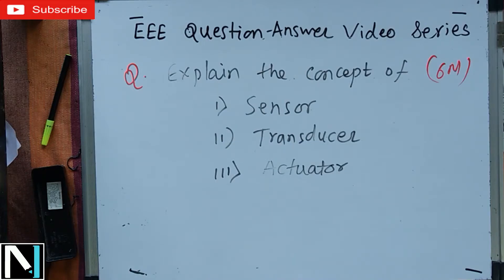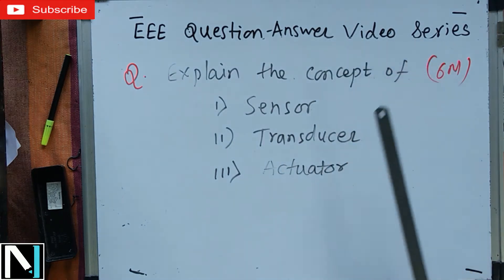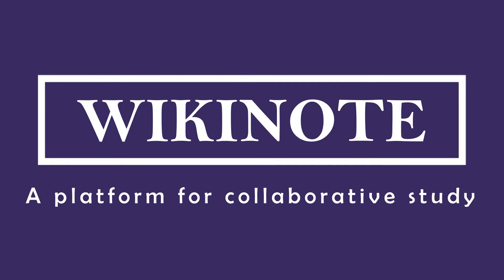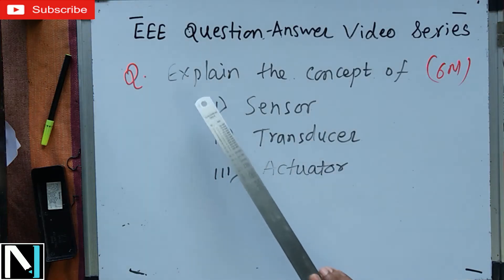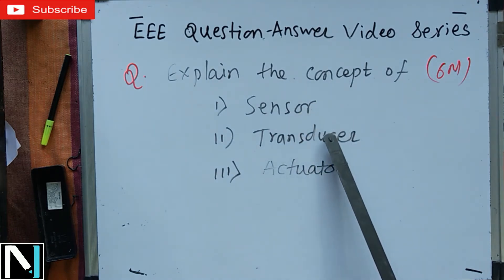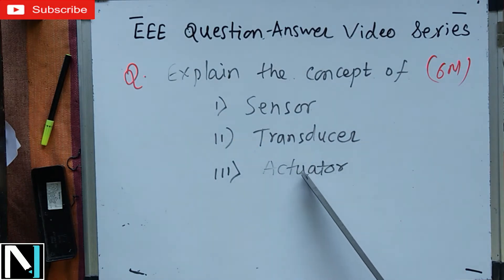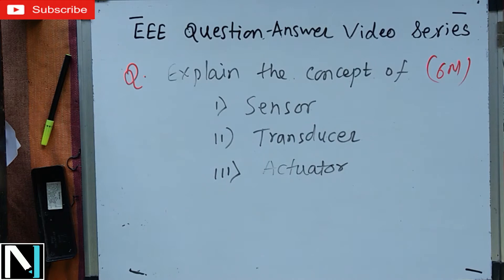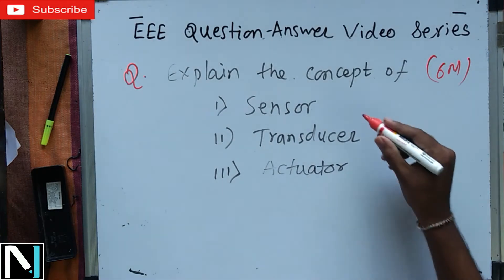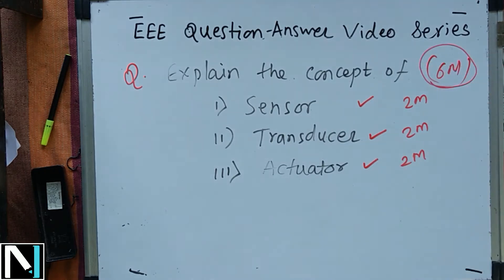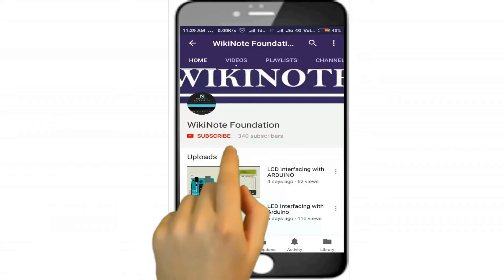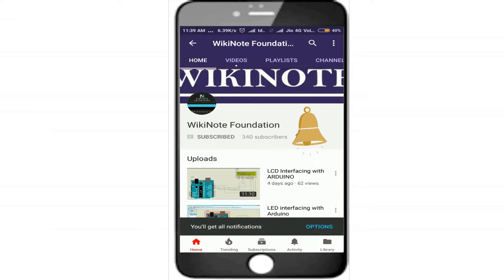Hello friends, it's Sujit Waag and you are watching the Wikinote channel. Welcome to the Triple E question-answer video tutorial series. In this video we are going to discuss the question: explain the concept of sensor, transducer, and actuator. This is from Unit 4. This question can be asked for six marks, with each concept carrying two marks each.